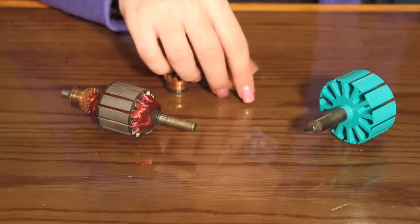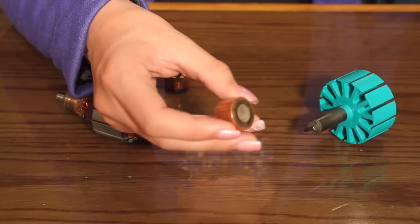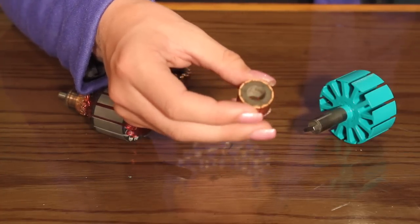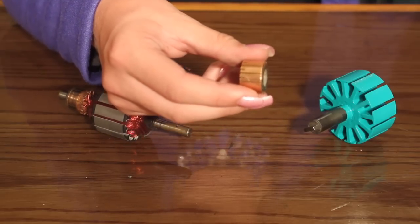Now look at this new replacement commutator. Plenty of thick copper to restore the armature back to its original life. But in order to replace it, we need to completely rewind the armature.